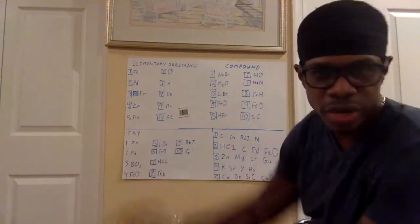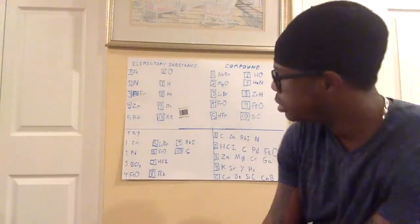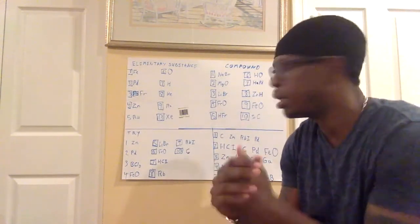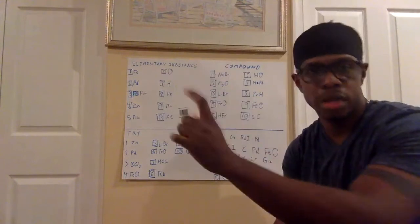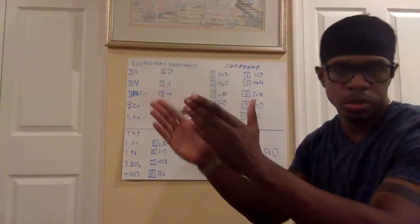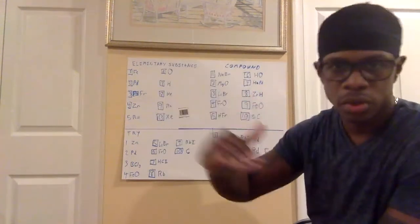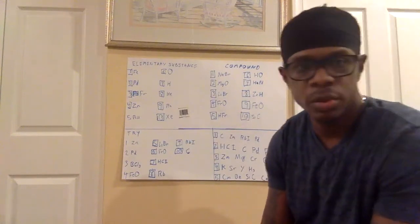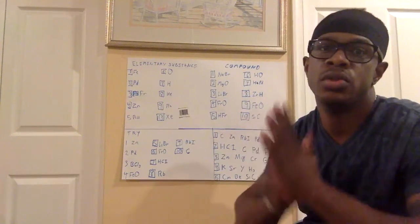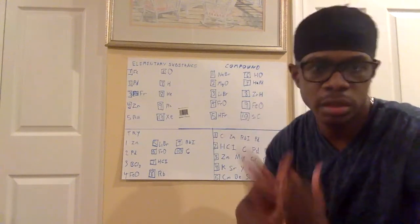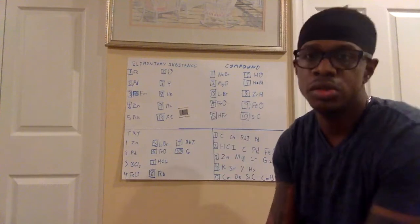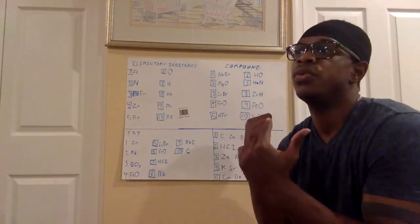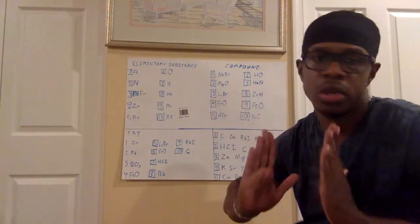What I want you to do for the next exercise — you have ten questions. You're going to put one through ten and say whether each one is an elementary substance or a compound. Pause the video, get a pen and paper, write down the answers. You need the practice for IXL. Pause the video.